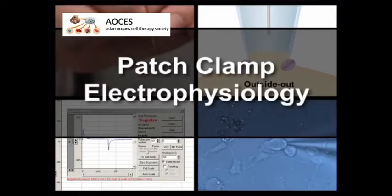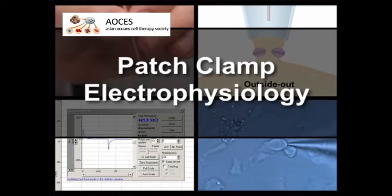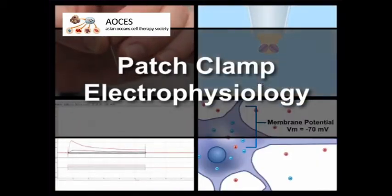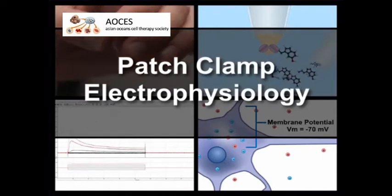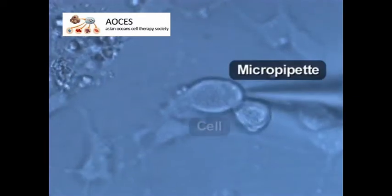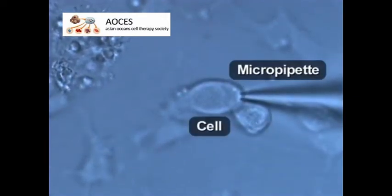Patch clamp recording is an extremely useful technique for investigating the biophysical properties of the ion channels that control neuronal activation. The procedure involves pressing a glass micropipet against a cell in order to isolate a small patch of membrane that contains one or more ion channels.